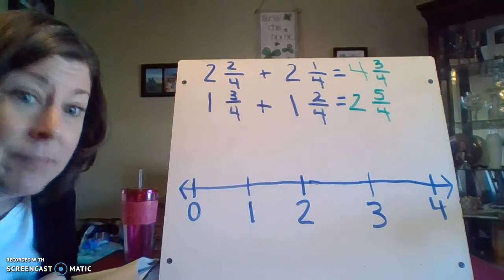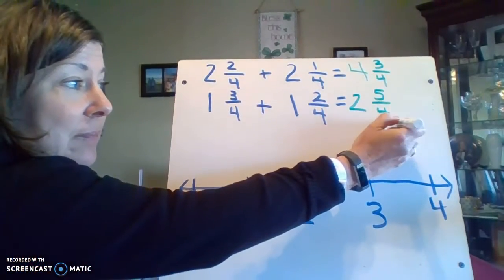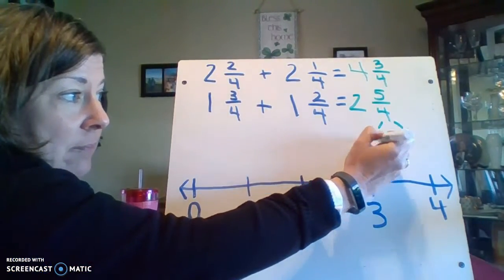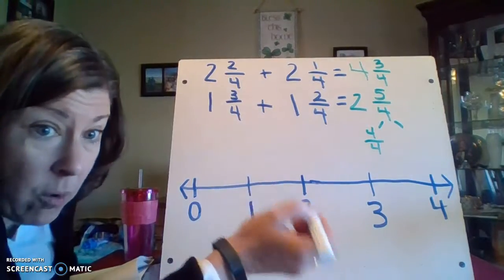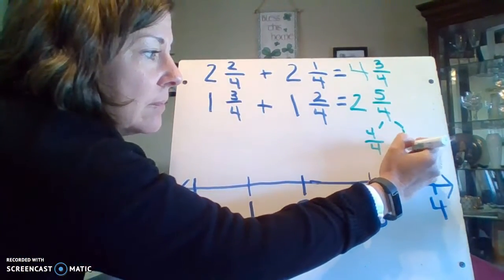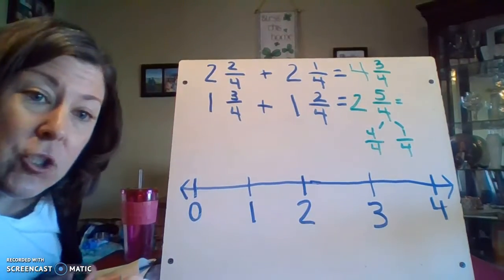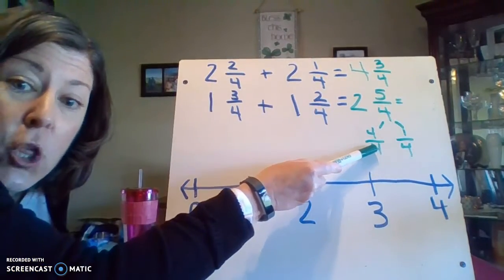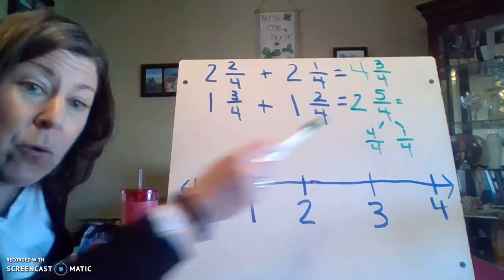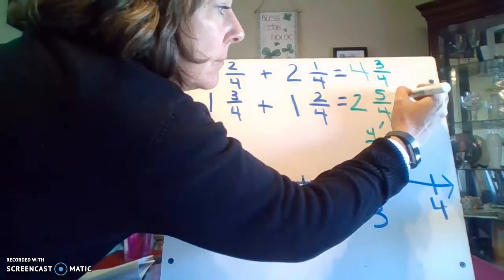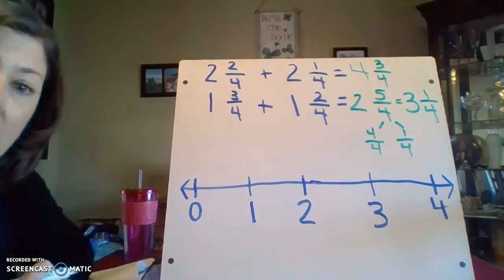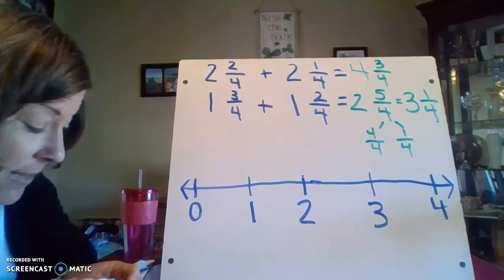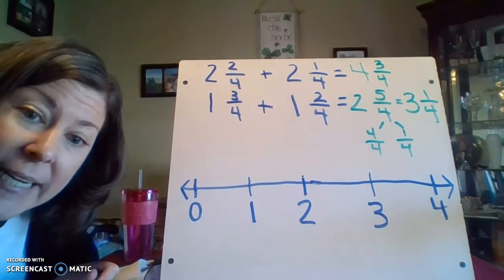Now you know what I'm going to say about that. You can say it for me. I know that five-fourths is the same as having one whole or four-fourths with an extra one-fourth. So my answer ends up being two, three, and one-fourth. So final answer, one and three-fourths plus one and two-fourths equals three and one-fourth. Now I'm going to show that on my number line.